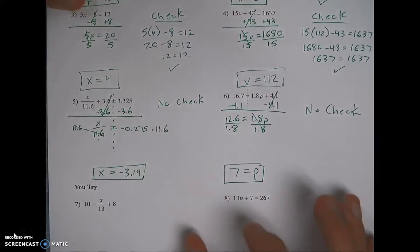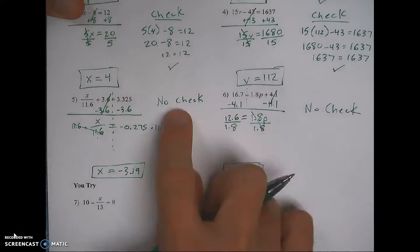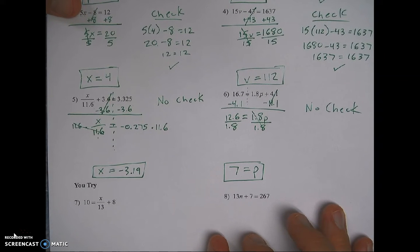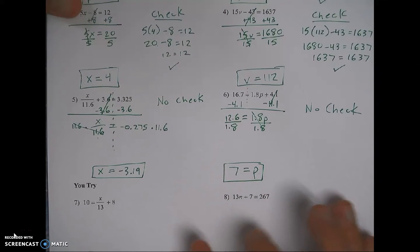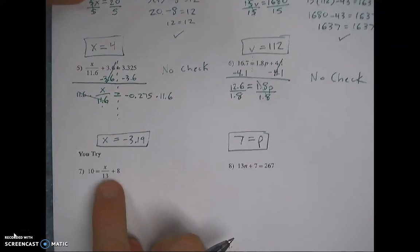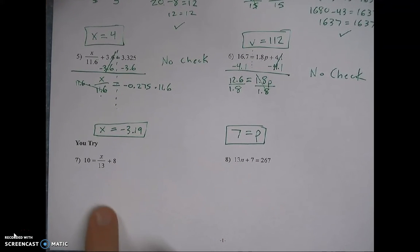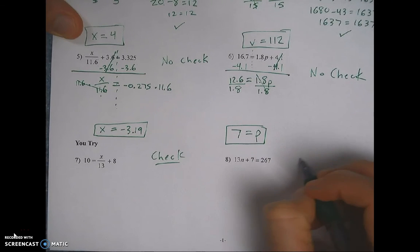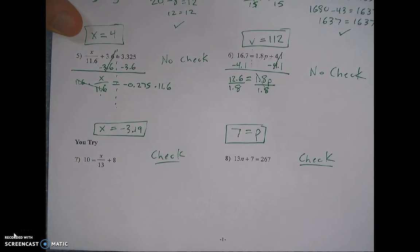Okay? So on your homework and on your classwork, you do not need to show a check for the decimal questions. Everything else, show a check. And again, you could show a check. It's not that you can't. If you want to check your answer, perfectly fine, but it will not be required for your credit. So you need to try these two bottom questions. Show all your work. Show your checks.